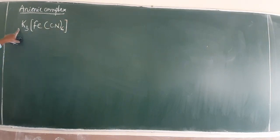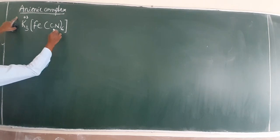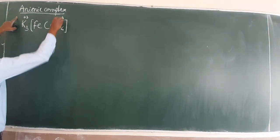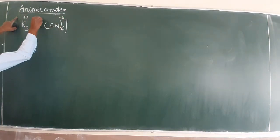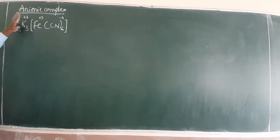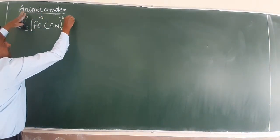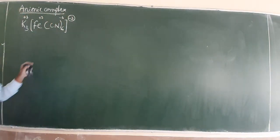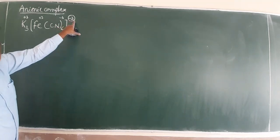I am going to find out is anionic or not. Fe is plus 3. Cyanide is minus 6. Plus 3. Close here.